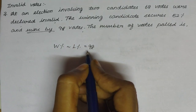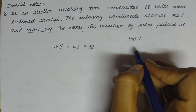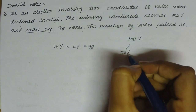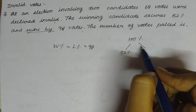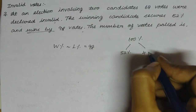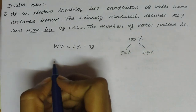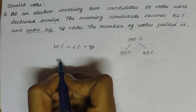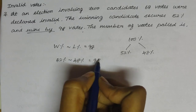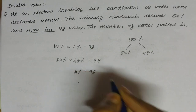First, we have three methods. Use 100% of total votes. The winner has 52%. Remaining is 48%, which is the loser's percentage. So 52% minus 48% is equal to 98. That is, 4% is equal to 98.